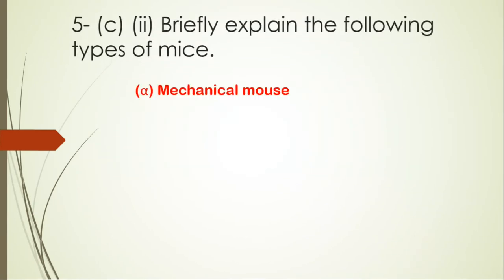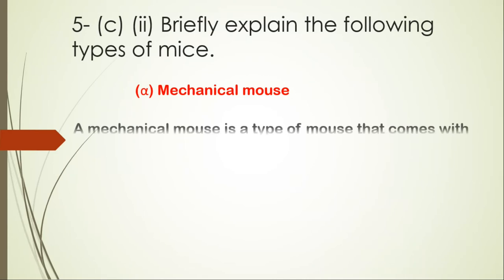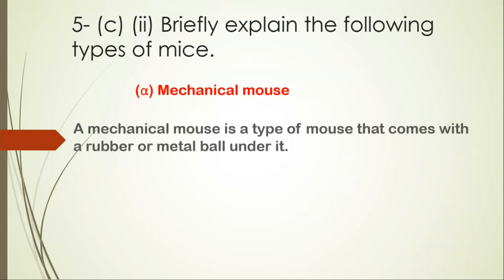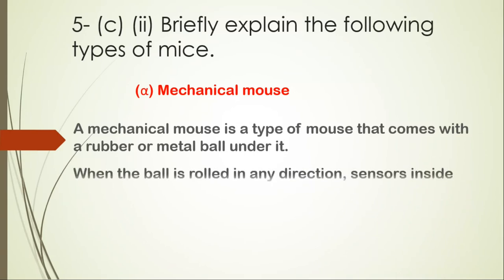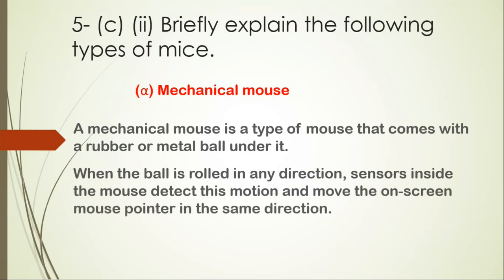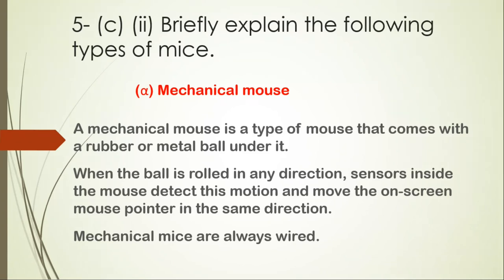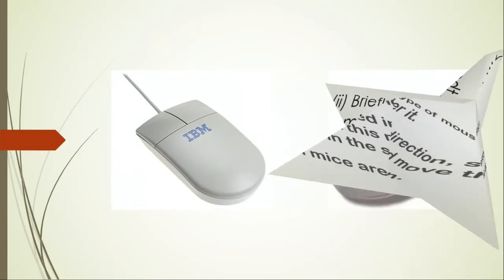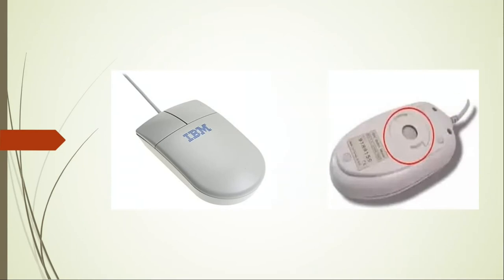Question five C-ii: briefly explain the following types of mice. A mechanical mouse is a type of mouse that has a rubber or metal ball underneath it. When the ball is rolled in any direction, sensors inside the mouse detect this motion and move the on-screen mouse pointer in the same direction. Mechanical mice are always wired — there is no wireless type.